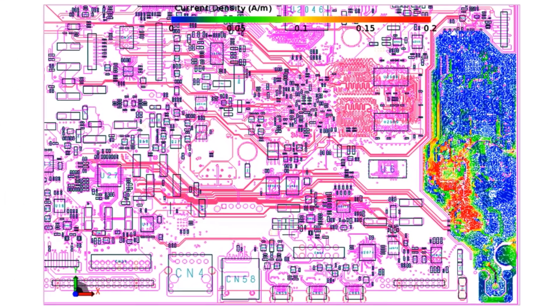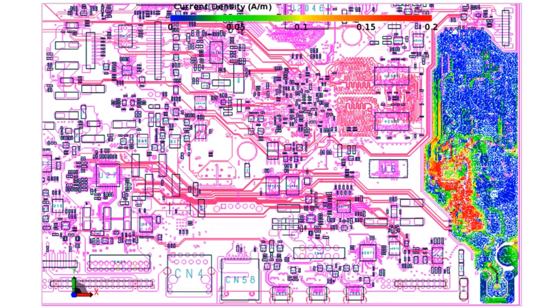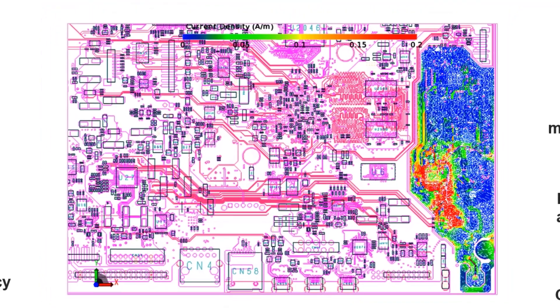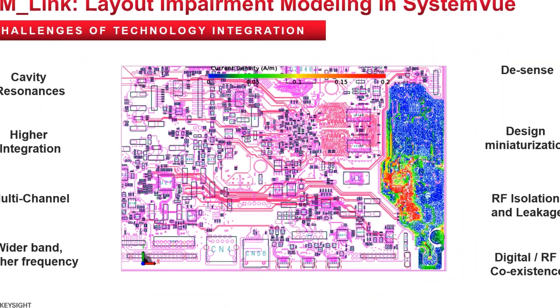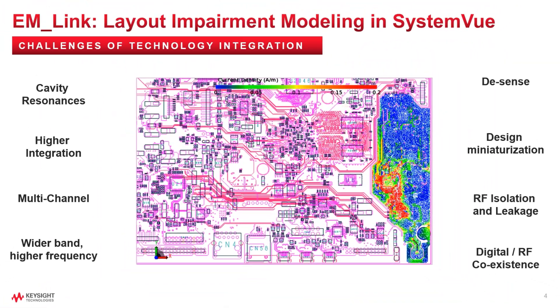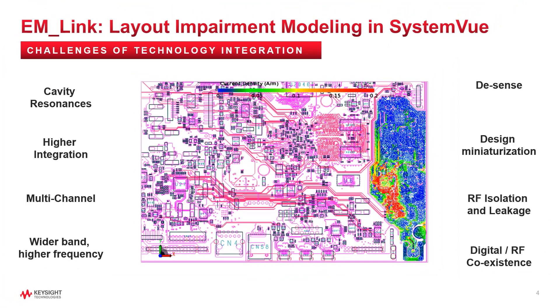Typically engineers only had time to complete this verification once. Any changes needed to mitigate leakage problems or cavity resonances found during the verification almost certainly had a high impact on the work to complete.